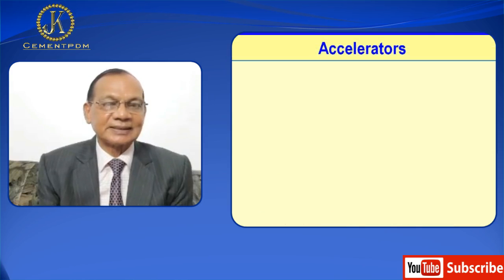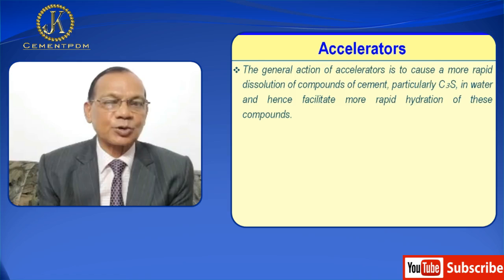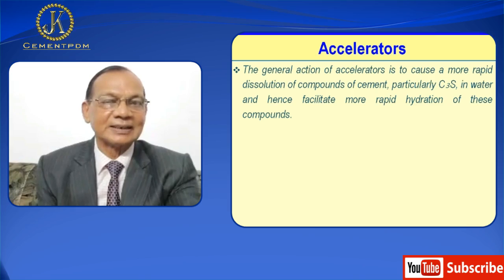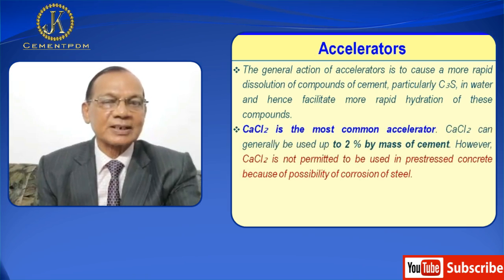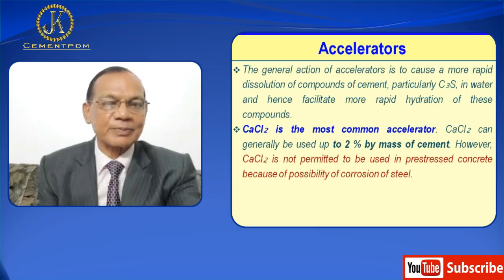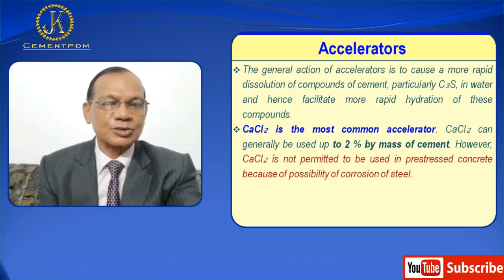The general action of an accelerator is to cause more rapid dissolution of compounds of cement, particularly C3S in water, and hence facilitate more rapid hydration of these compounds. Calcium chloride is the most common accelerator and can generally be used up to 2% by mass of cement. However, calcium chloride is not permitted in pre-stressed concrete because of the possibility of corrosion of steel.